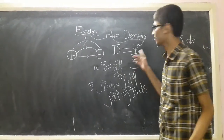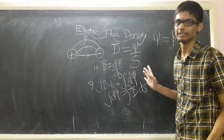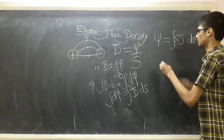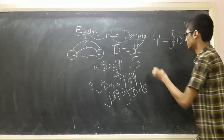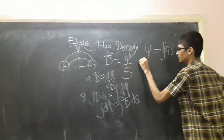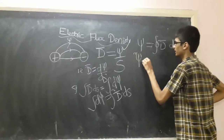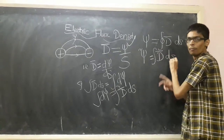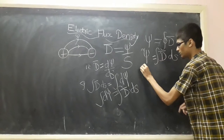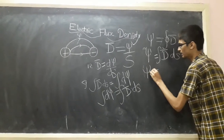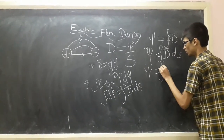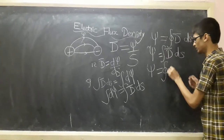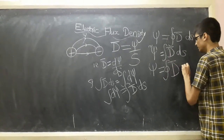This is the equation for electric flux density. For an open surface, psi is equal to the integration of D-bar dot ds. For a closed surface, psi is equal to the closed surface integration of D-bar dot ds.